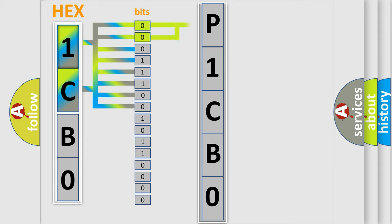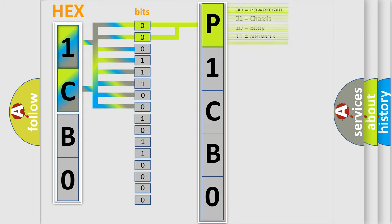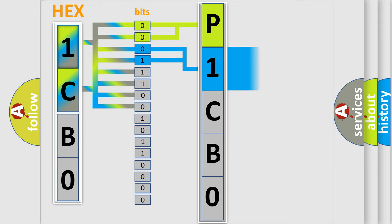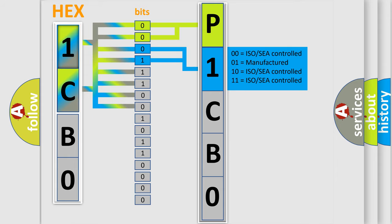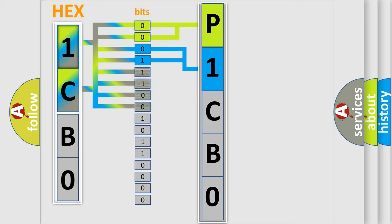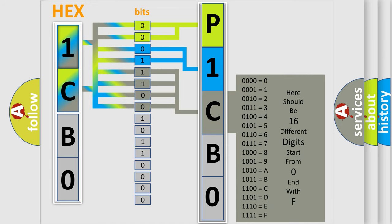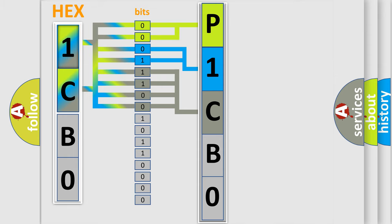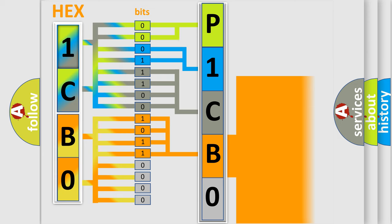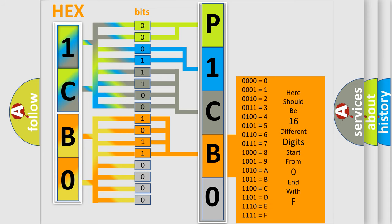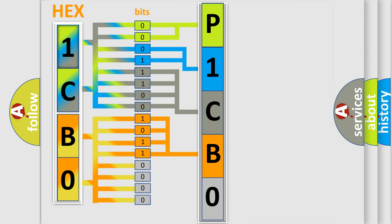By combining the first two bits, the basic character of the error code is expressed. The next two bits determine the second character. The last bits of the first byte define the third character of the code. The second byte is composed of a combination of eight bits. The first four bits determine the fourth character, and the combination of the last four bits defines the fifth character. A single byte conceals 256 possible combinations.